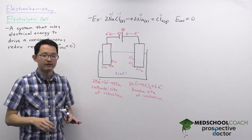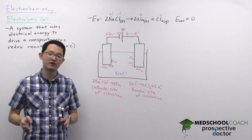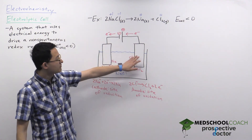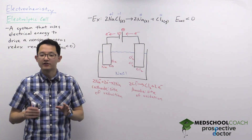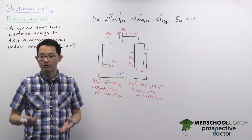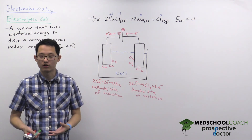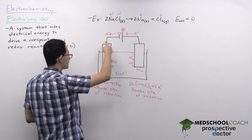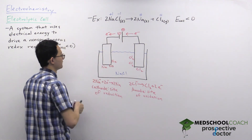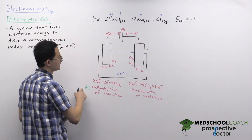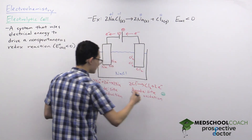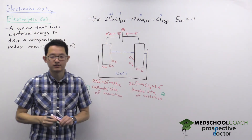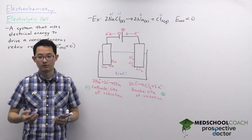It's important for the MCAT to know the charges of the anode and cathode. In an electrolytic cell, electrons move from the anode to the cathode, but this is a non-spontaneous process. Ask yourself: what do electrons not want to move toward? Electrons do not want to move toward a negative, so the cathode is negative and the anode is positive. Electrons don't want to leave a positive either, but they're being forced to by the battery added to the system.